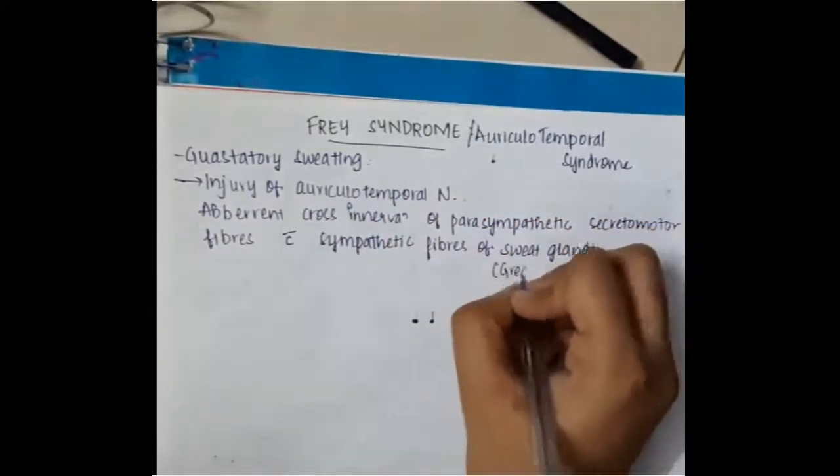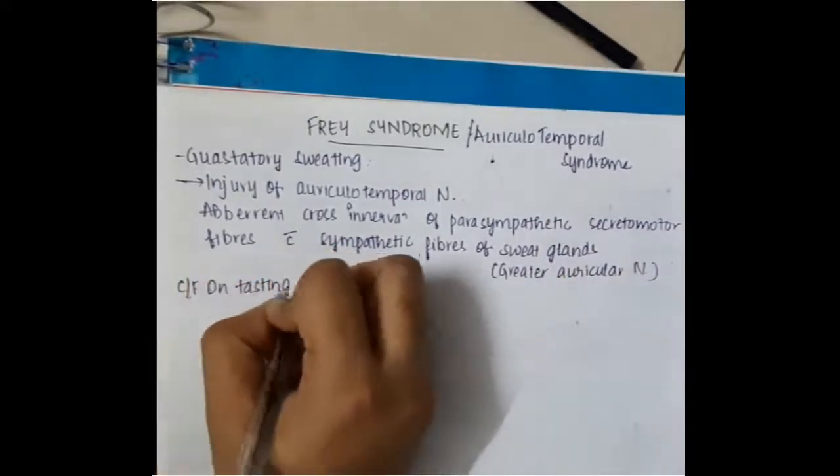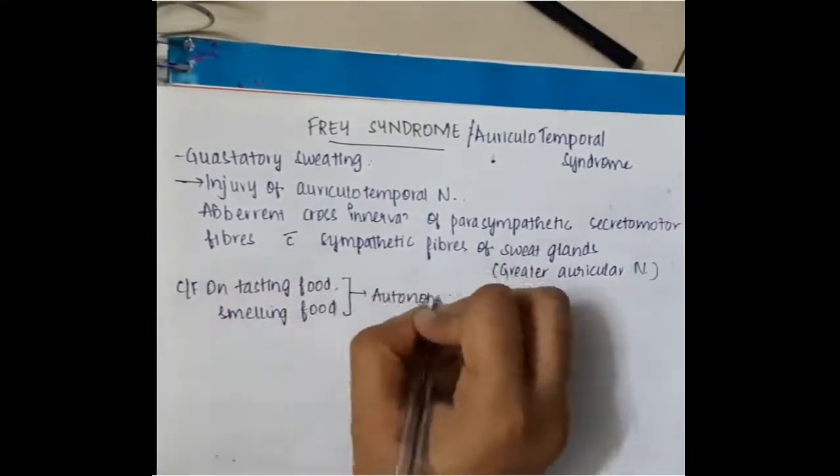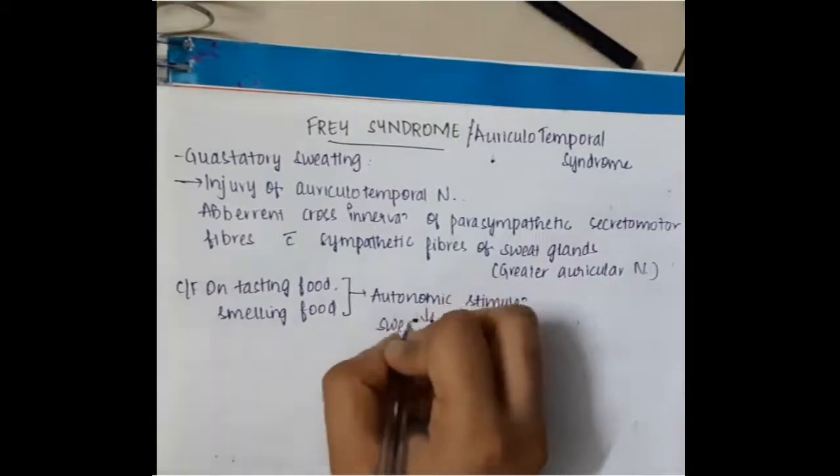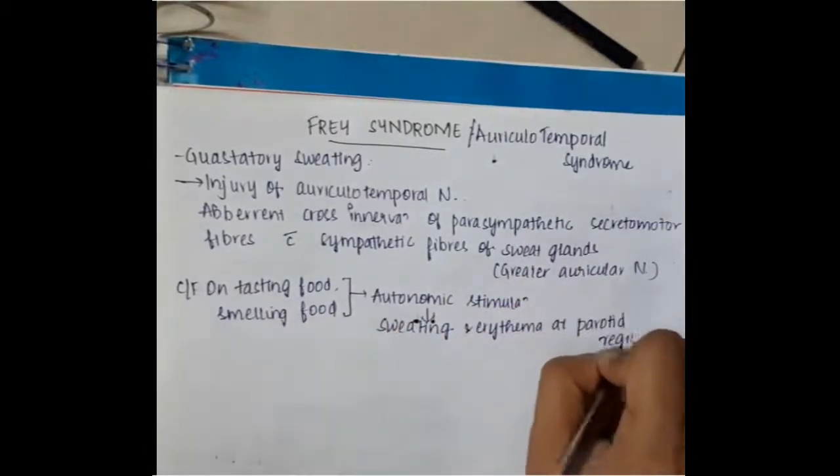So, you will see this aberrant cross connection is responsible for this Frey's syndrome. As a result here, the clinical features are on tasting or smelling food, there is autonomic stimulation which causes sweating and erythema at the parotid gland region.